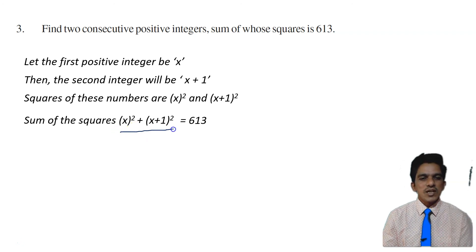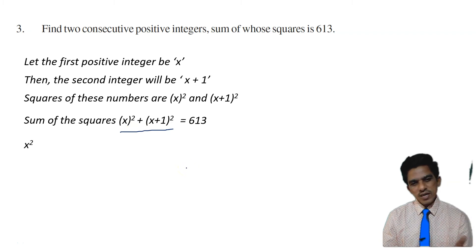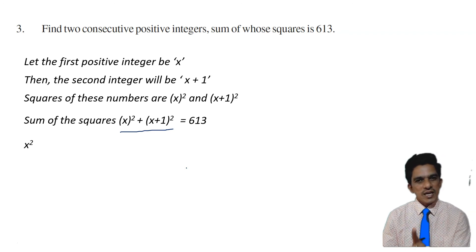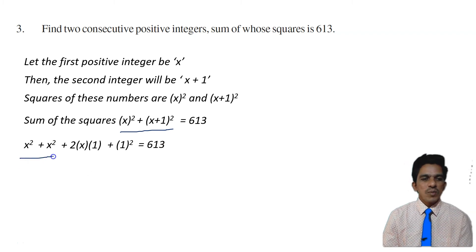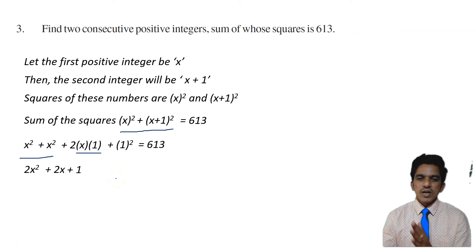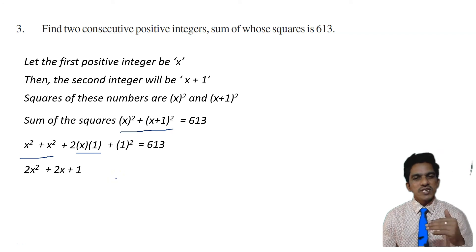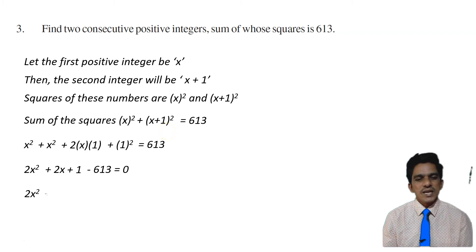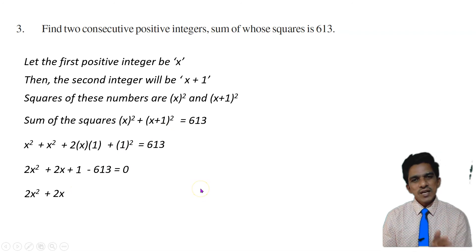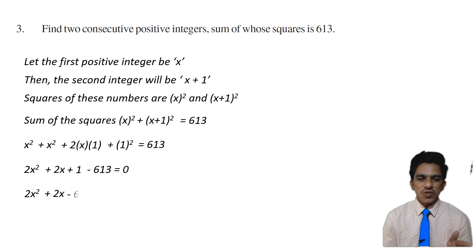On the left side we have x squared plus (x plus 1) whole squared. Expanding (x plus 1) whole squared using the identity (A plus B) squared equals A squared plus 2AB plus B squared: it becomes x squared plus 2x plus 1. So on the left side: x squared plus x squared plus 2x plus 1 equals 2x squared plus 2x plus 1. Transposing 613 to the left: 2x squared plus 2x plus 1 minus 613 equals 0, which gives 2x squared plus 2x minus 612 equals 0.